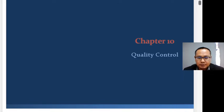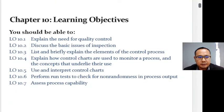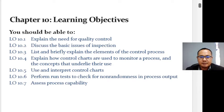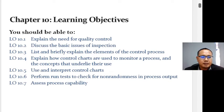As you can see from the slide, the learning objectives we try to achieve are: explain the need for quality, discuss the basic issues of inspection, explain the elements of control process, explain how control charts are used to monitor a process, interpret a control chart, perform run tests to check for non-randomness in process output, and assess process capability.